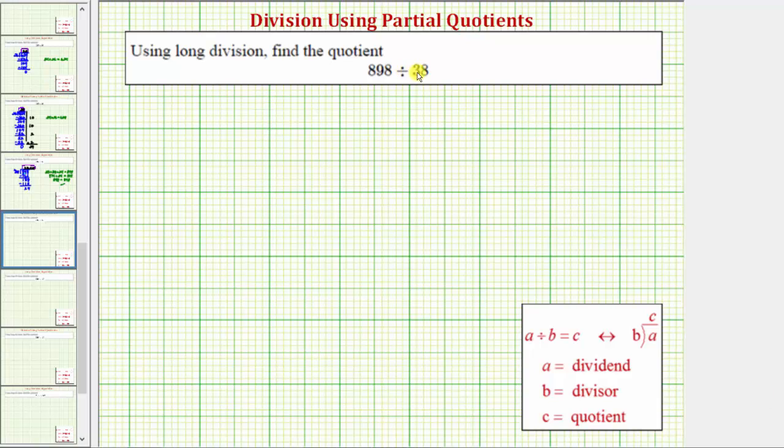We're asked to use long division to find the quotient. We have a three-digit number divided by a two-digit number. For this example, instead of using the traditional long division algorithm, we'll use the method of partial quotients.